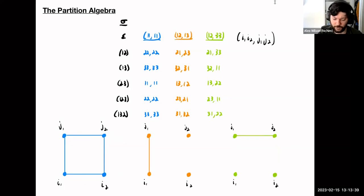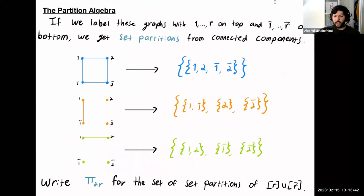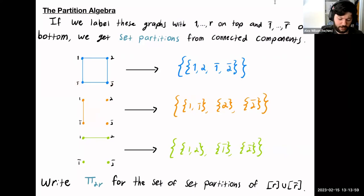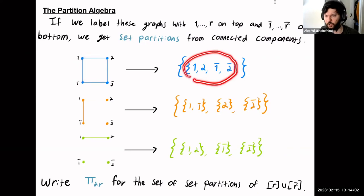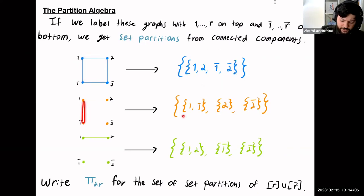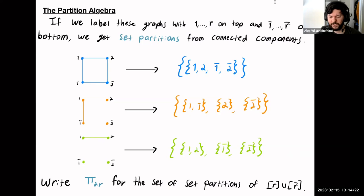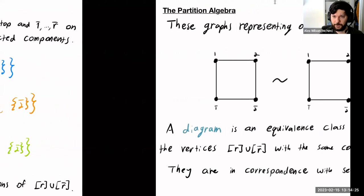We have to be a little bit careful. The underlying object here is really a set partition. If we label the diagrams with numbers 1 through R up top and 1-bar through R-bar on the bottom, taking the connected components together gives us a set partition. Here all four are in one block. In the middle diagram, one and one-bar are connected, while two and two-bar are by themselves. We write Pi sub 2r for the set of these set partitions.